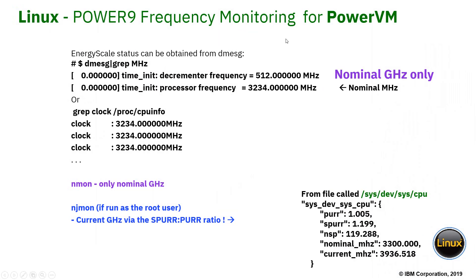For PowerVM running Linux, we have this chart. The normal places you might find the frequency data that we saw on the previous page don't work in this environment. Nmon only reports the nominal gigahertz. But my NJMon can actually work out that we're overclocking. It goes to /sys/dev/sys/cpu and a couple of other files in that area, and it works out the differences between the per and the spur to calculate the overclocking. Because this is nearly 1, you can actually see the 19% in there. It works out the rating by multiplying up the nominal megahertz, and that's reported in the JSON output of NJMon.